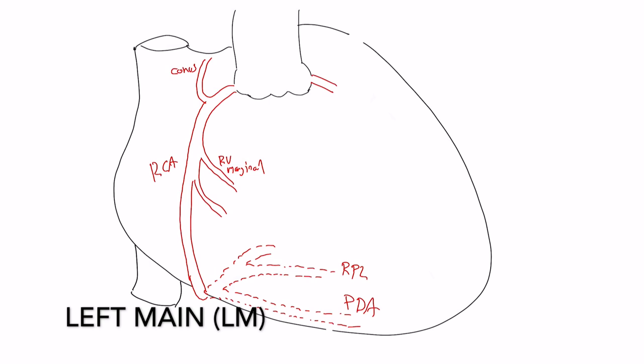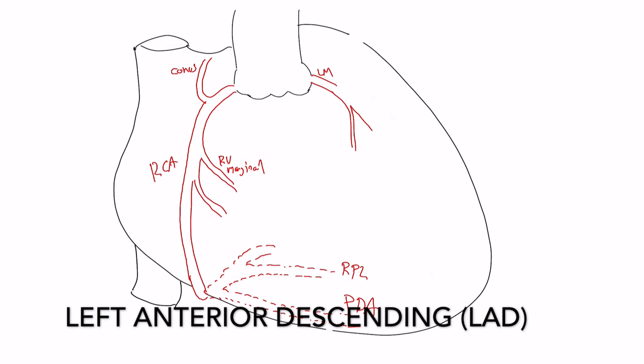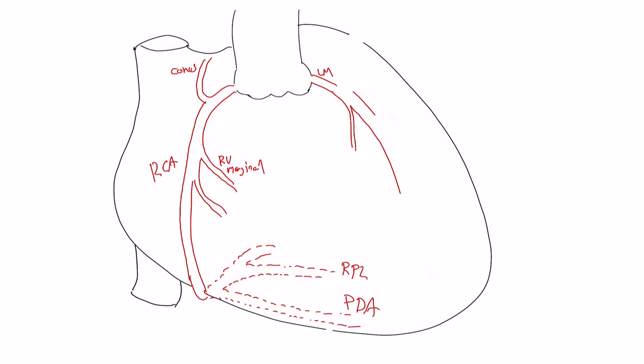Moving on to the left, the left main is going to be coming off the left coronary ostium. This is going to bifurcate into the LAD, the left anterior descending, which is going to be coming down here. We're going to get some diagonal branches, supplying the anterolateral segments, and this is going to come down around the apex and generally supply some distal infraapical segments there. This is our LAD.